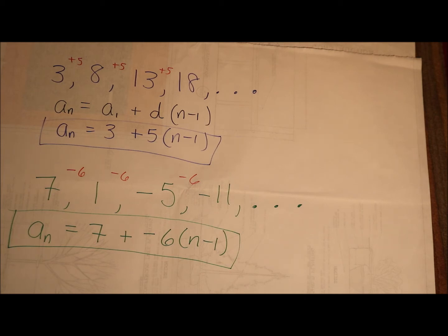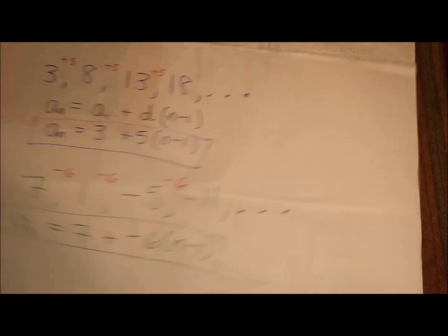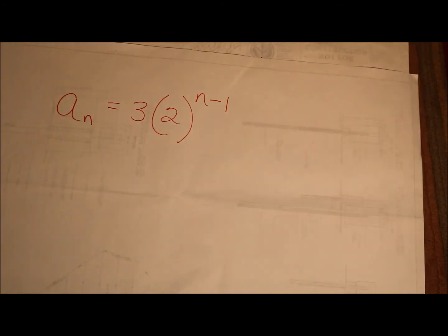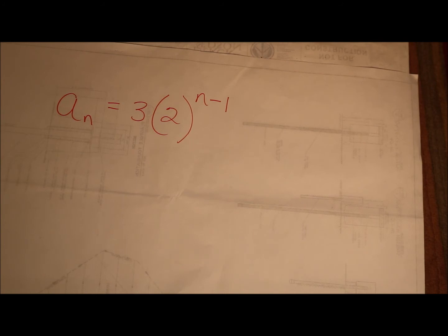Let's look at some geometric examples. Geometric sequences are like exponential functions. They have a pattern, but instead of plus something, plus something, plus something, it's times something, times something, times something.